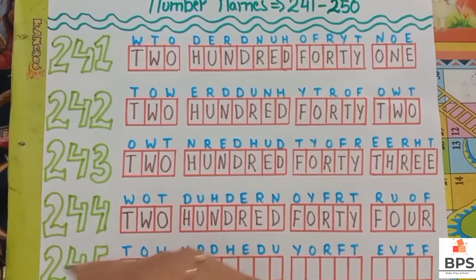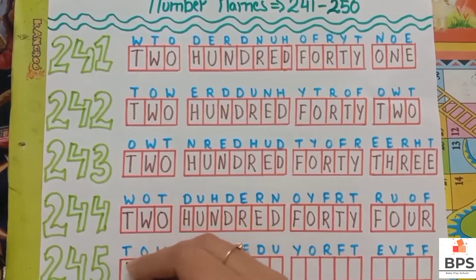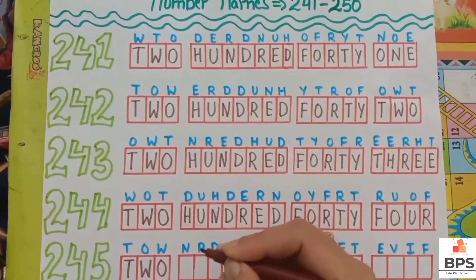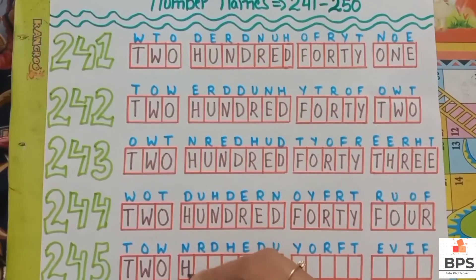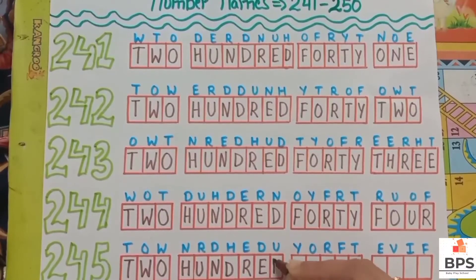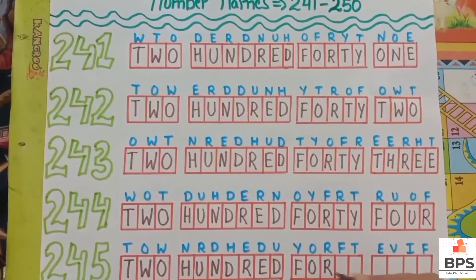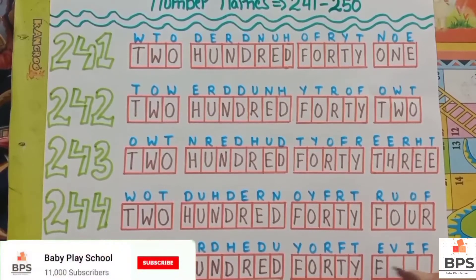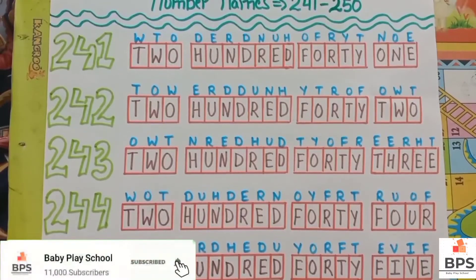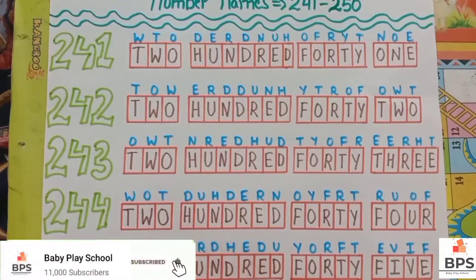Two hundred forty five — 245. T-W-O, 2; H-U-N-D-R-E-D, 100; F-O-R-T-Y, 40; F-I-V-E, 5. Two hundred forty five — 245.